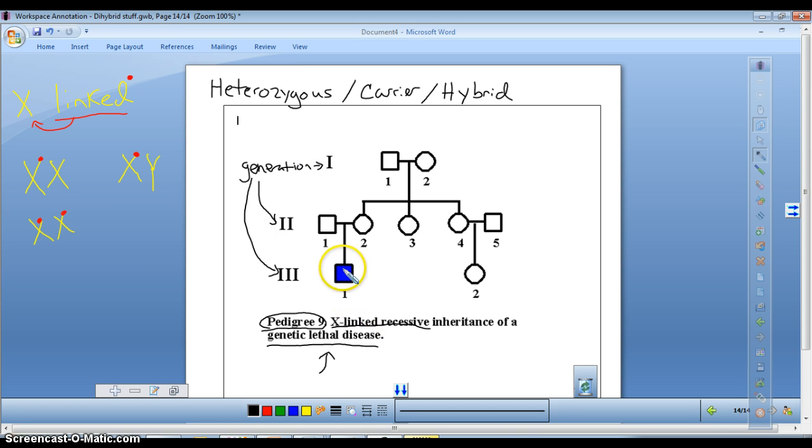Now, here we have this individual right here, who shows the trait. If it's an X-linked trait, remember, boys are XY. If he is showing the trait, that means his X chromosome has the trait on it. And you usually find boys showing X-linked traits, because they only have one X. They don't have another X to mask it, if it's recessive.